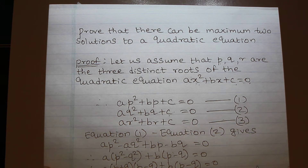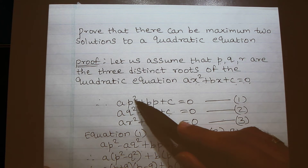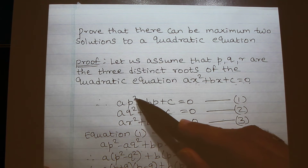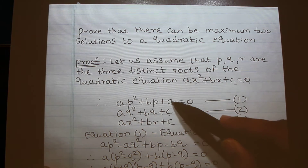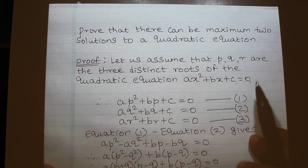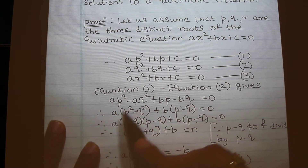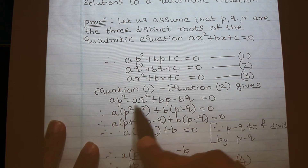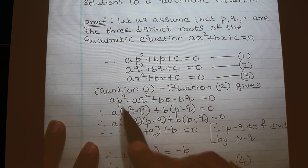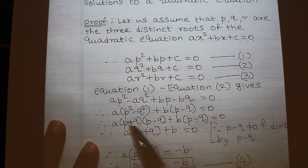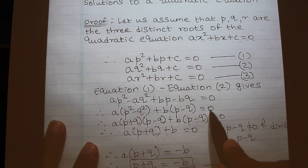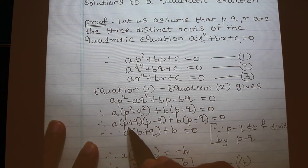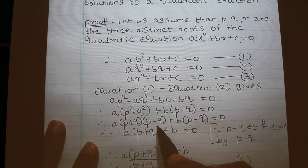In order to eliminate c, we perform equation 1 minus equation 2. We get: ap² − aq² + bp − bq = 0. Note that c gets cancelled out. Performing the algebra, a is common so I write a(p² − q²); b is common so I write b(p − q) = 0. We know that p² − q² = (p + q)(p − q).